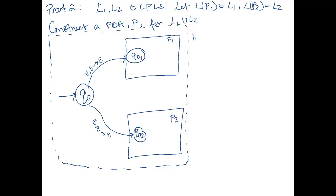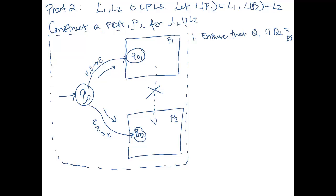Some things to be careful of: let Q1 be the set of states for P1 and Q2 the set of states for P2. We want to ensure Q1 intersect Q2 is empty, so they are disjoint. This prevents mixing transitions between the two PDAs. If I start at Q0 and go to Q0-sub-1, I can't then jump to P2's states. I want a string to be accepted by P1 or P2, not some illegitimate cross-PDA path.